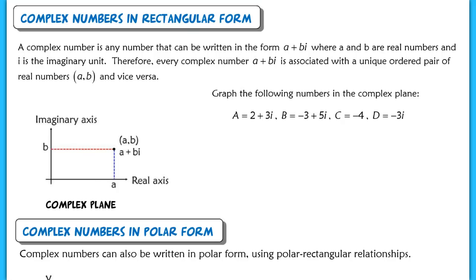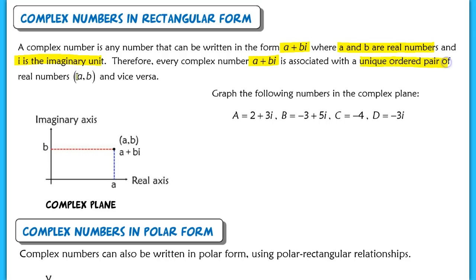We've studied complex numbers in this course before, so recall that a complex number is any number that can be written in the form A plus Bi, where A and B are real numbers and i is the imaginary unit. Every complex number written in this rectangular form, A plus Bi, can be associated with its own unique ordered pair of real numbers, A, B.